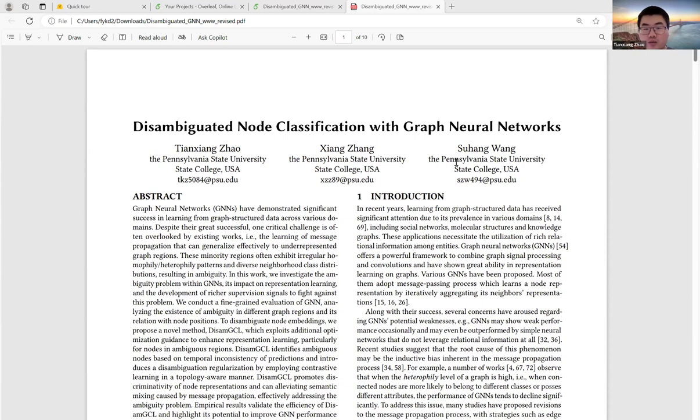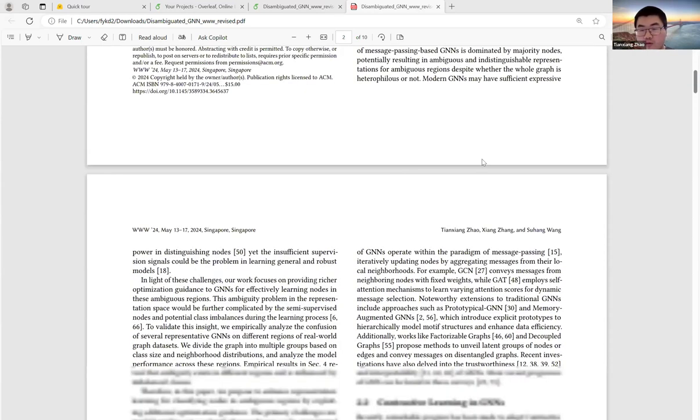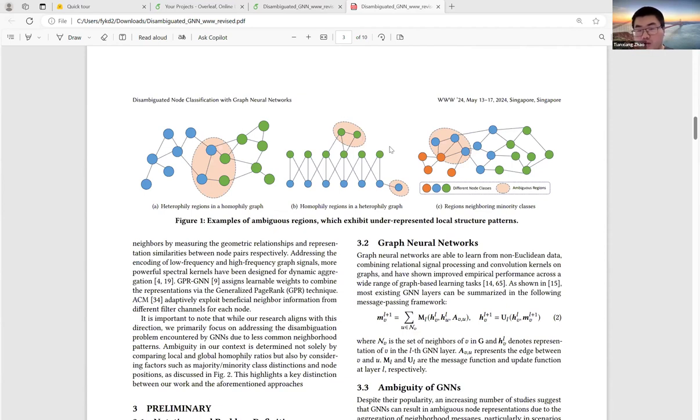In this work, we consider the problem that in the graph, there are certain regions where nodes may get ambiguous embeddings due to the message propagation of graph networks. Here are some examples.